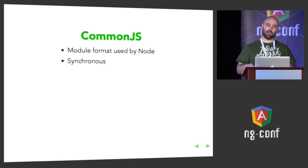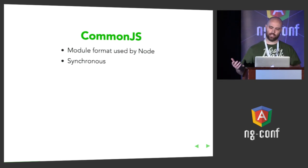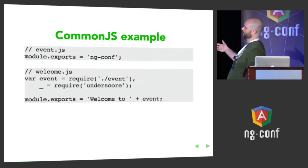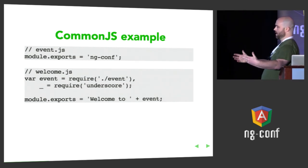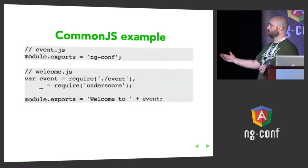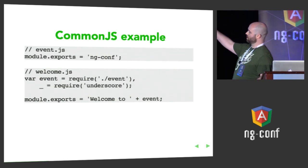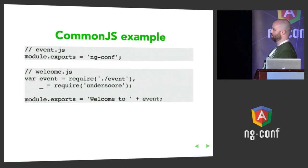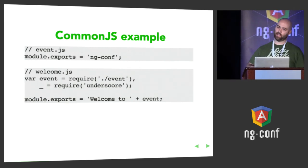The thing about it is CommonJS is synchronous, and so they use it in Node because synchronous is okay in Node. Usually synchronous dependency loading in the browser is not okay. That's where Browserify comes in. In case you're not familiar with CommonJS syntax, we've got two CommonJS modules here. The top one, event.js, just exports a string as its value — that's what it provides to the rest of the world. welcome.js imports event, and the dot prefix means it's a relative file path include. welcome.js then exports 'welcome to ng-conf' by using the value it got from event.js.